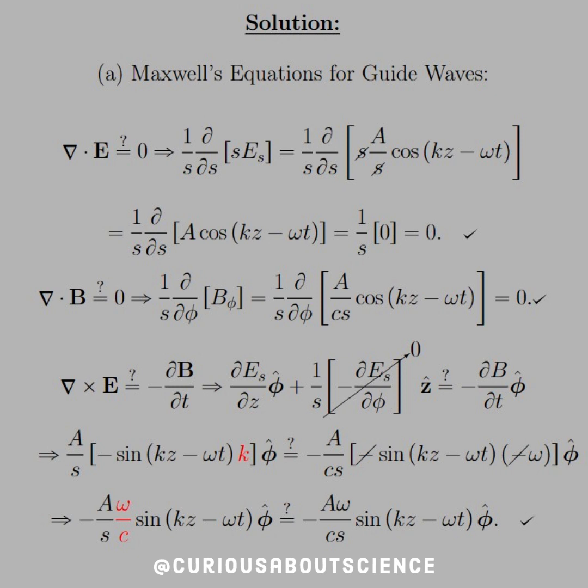And, k, the wave number, we can write as omega over C. So, on both sides, we have an A omega over CS, good to go there.